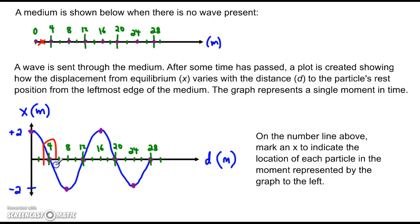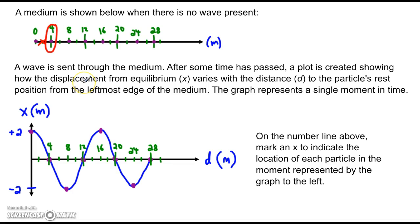The next dot is for the particle whose rest position — the x-value — is four meters. Find that particle on the number line: four meters, here it is. Is it still located at four meters or has it been displaced? At this point, the y-value is zero, so there is not any horizontal displacement. The particle is still at the same spot — no displacement.